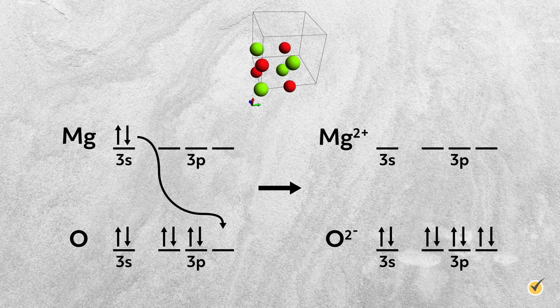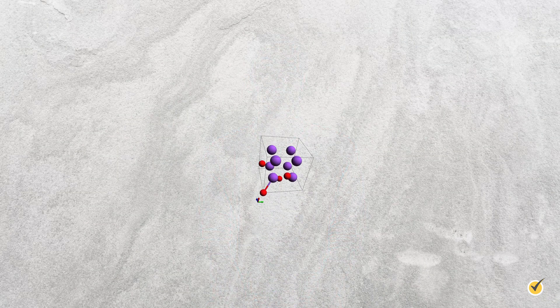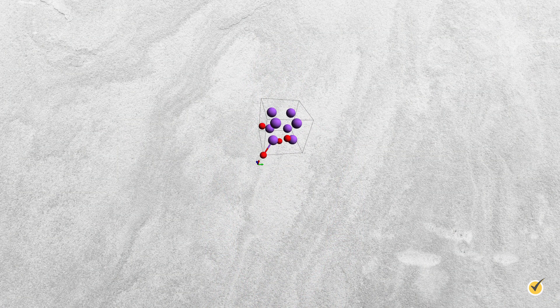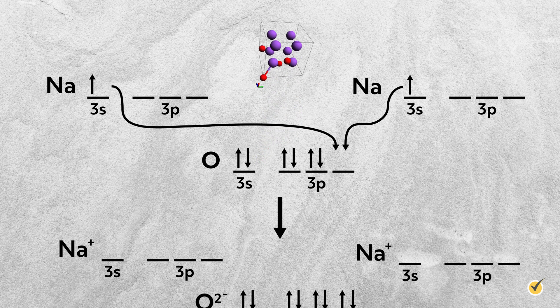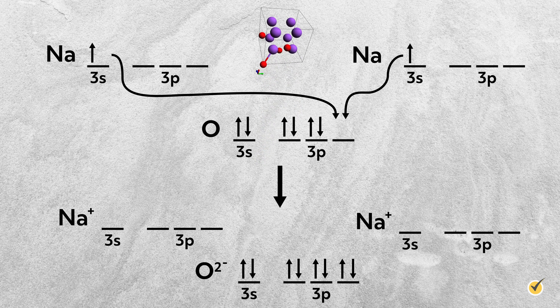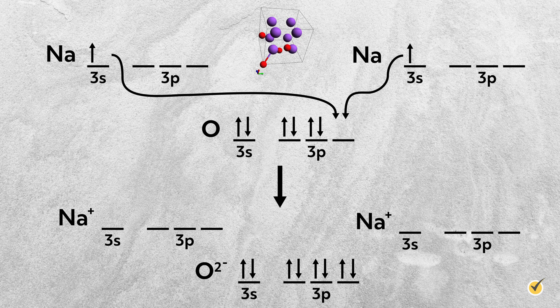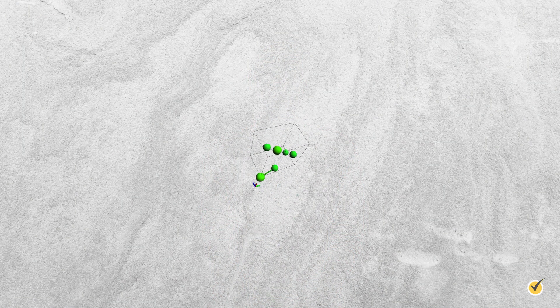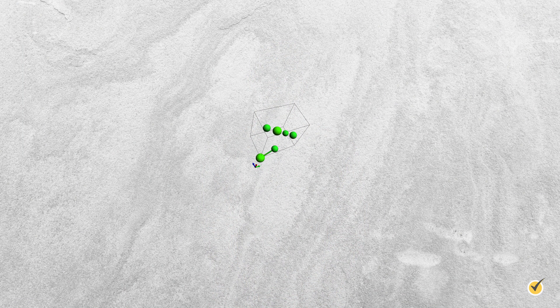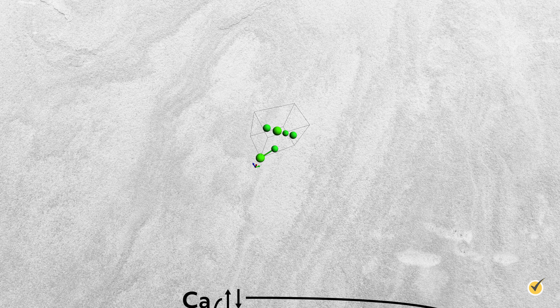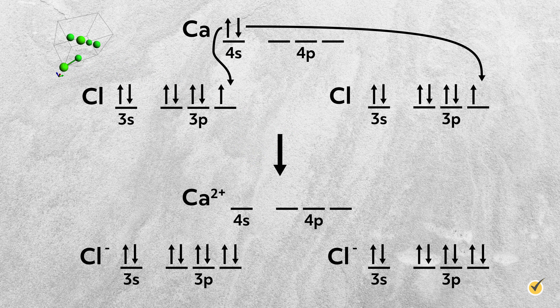Second, elements from group 1A can combine with 6A elements. In these cases, two atoms of the group 1A element are necessary, each one donating an electron to the 6A atom. This happens in the formation of sodium oxide, Na2O, where each sodium donates one 3s electron to fill up the 3p orbital of oxygen. Similarly, a group 2A atom can combine with two 7A atoms, where the metal donates two electrons, one to each of the 7A atoms. This happens in the formation of calcium chloride, CaCl2, where the calcium donates its two 4s electrons to fill up the 3p orbital of each chlorine.